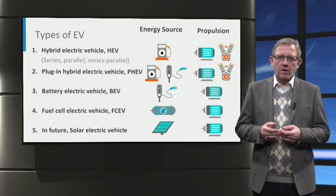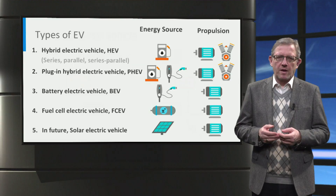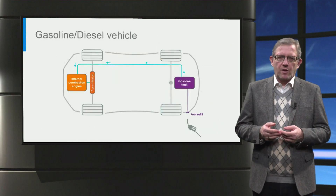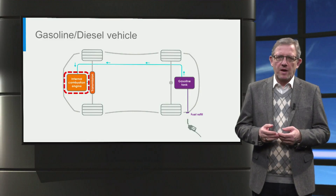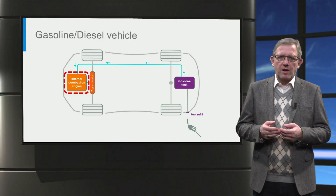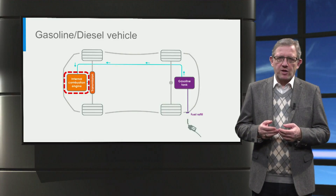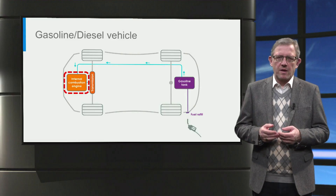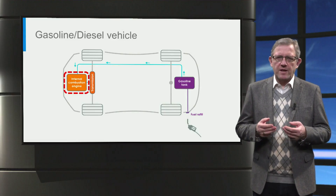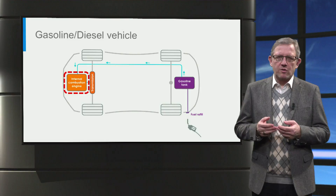Now let's look at these vehicles one by one. For reference, let us start with the gasoline and diesel vehicles that use an internal combustion engine for propulsion. A gasoline car typically uses a spark-ignited engine rather than a compression-ignited system used in diesel vehicles. The engine uses a complex mechanical transmission system to transfer power to the wheels.